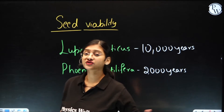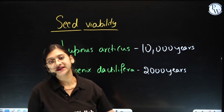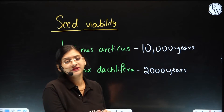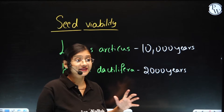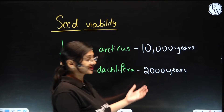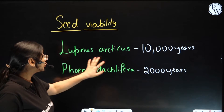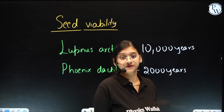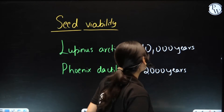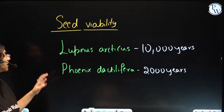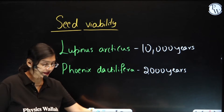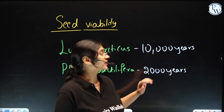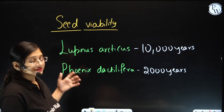Just before we saw pollen grain viability. Similarly, we get to see seed viability, which means the seeds will be able to germinate. Sometimes they would be showing dormancy — they can stay viable for a longer time. So Lupinus arcticus is able to show viability for 10,000 years — basically during this particular duration they were dormant, found in the Arctic region. And then Phoenix dactylifera — the scientific name of dates — they were able to show viability of 2,000 years. So these are some of the examples for seed viability.